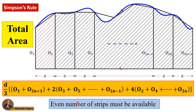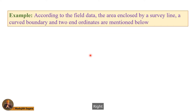Here you can see the corresponding equation of Simpson's rule. The most important thing is that an even number of strips must be available — the number of strips must be even, otherwise you can't use Simpson's rule. Today my aim is to teach you the way of dealing with both the trapezoidal and Simpson's rule together in the same problem.